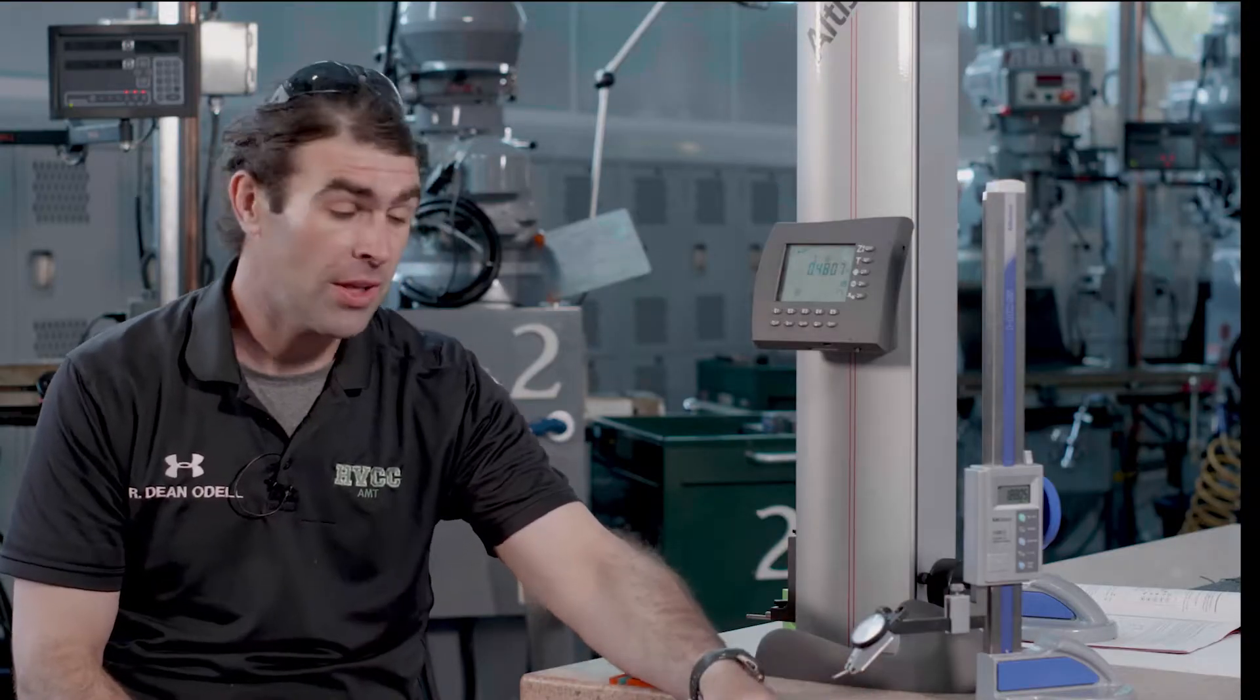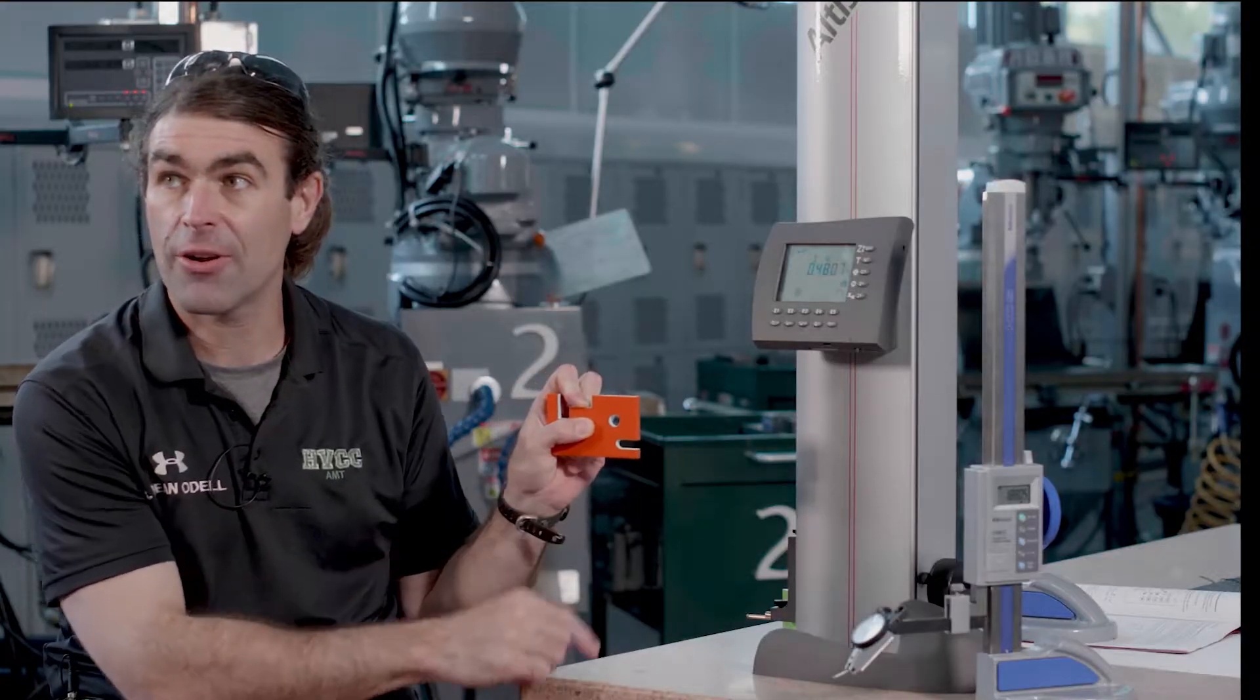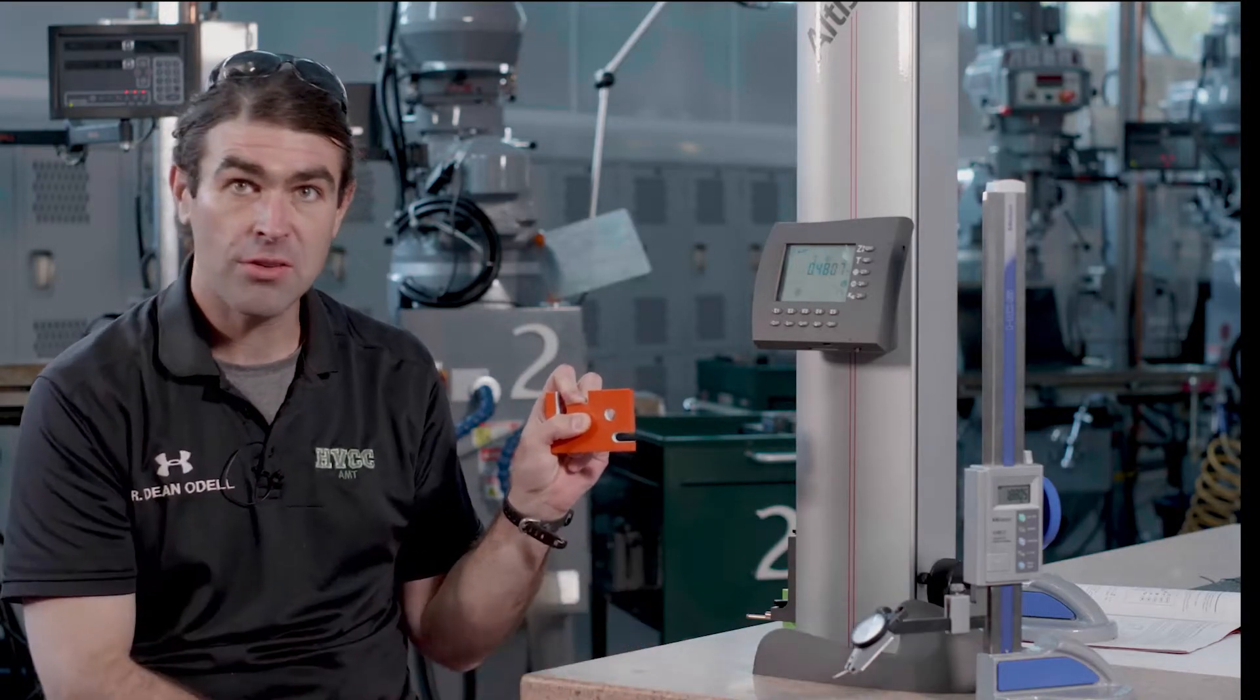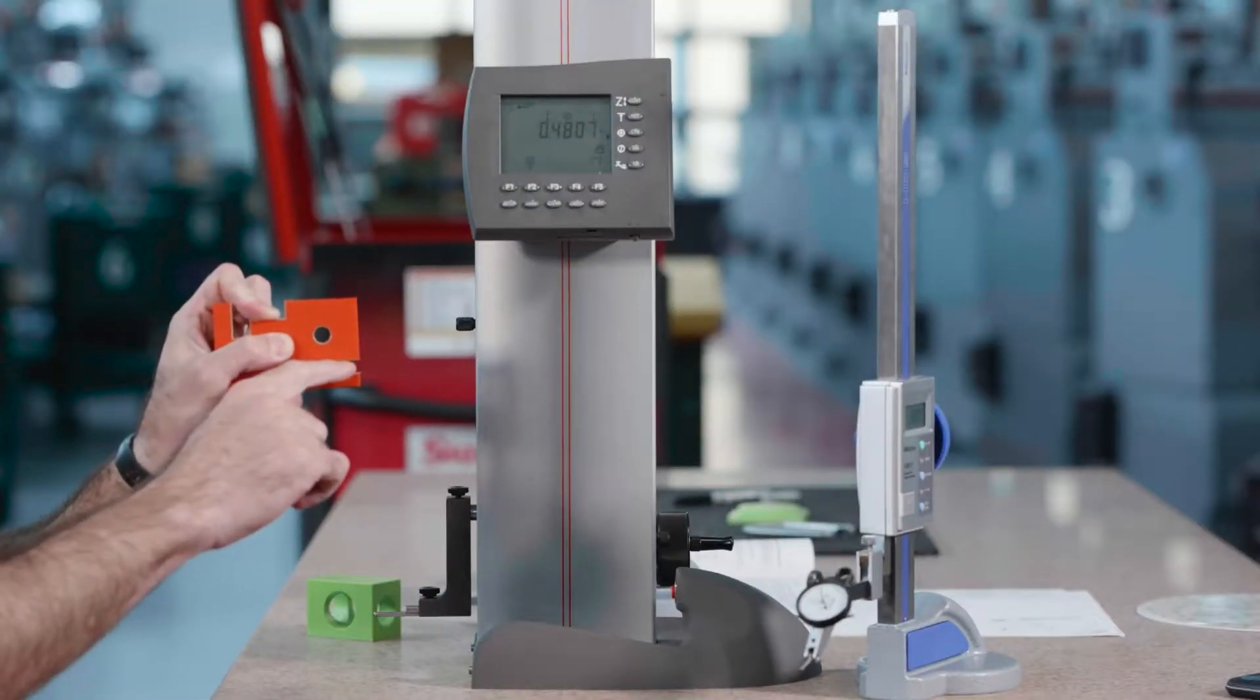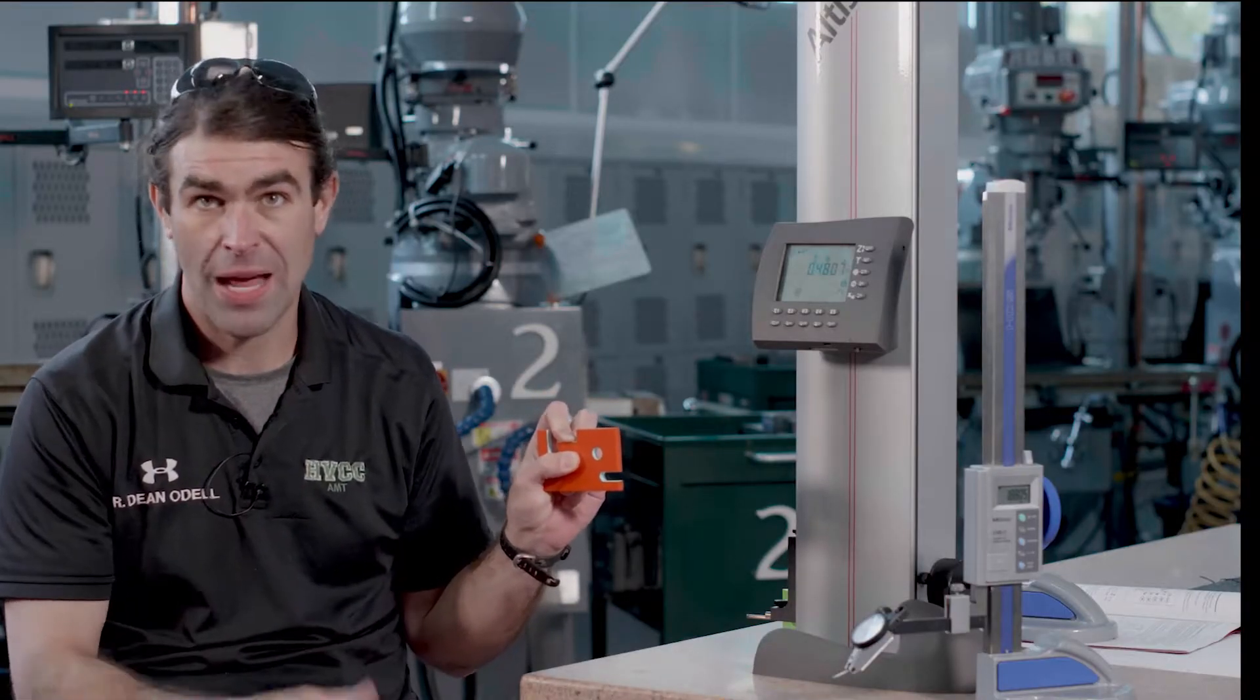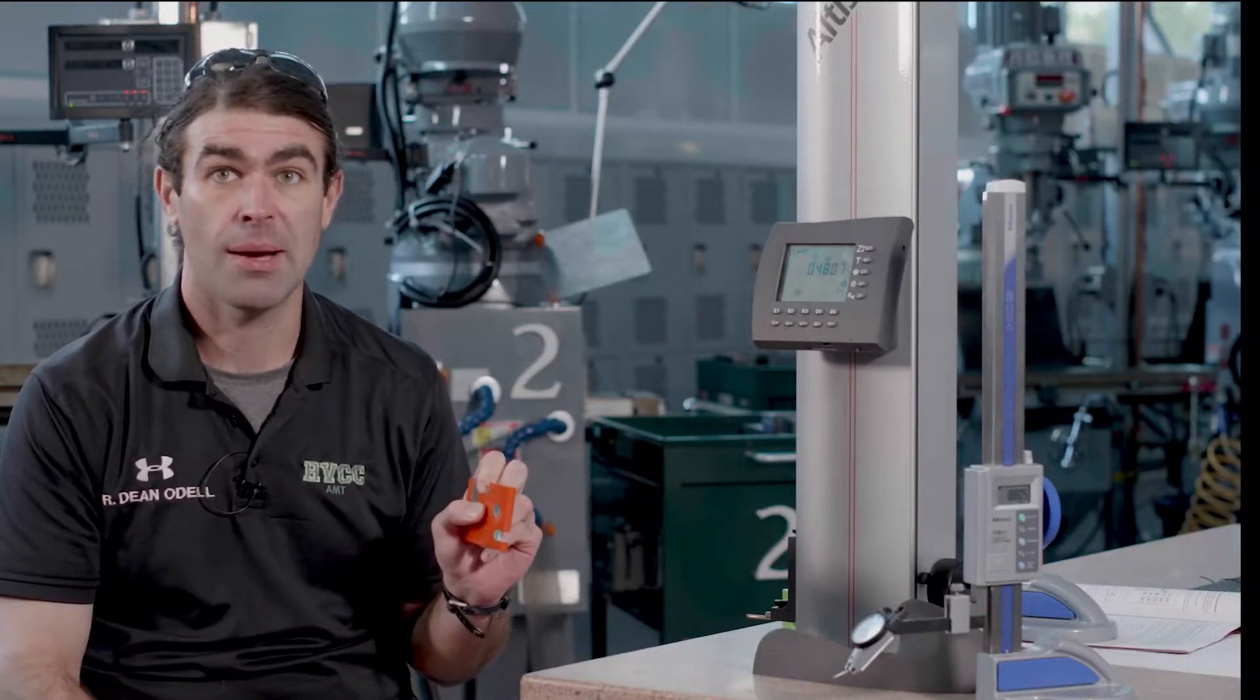The way we avoid that with the height gauge is by putting a test indicator on the height gauge. When we zero on the table, we're going to also zero this indicator. That way we can know we're applying the right amount of force and get good results for the height of things. The downside to the indicator is that you're zeroing to one side of the probe.